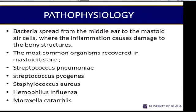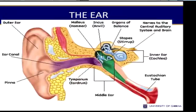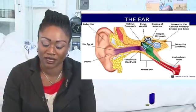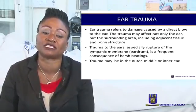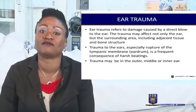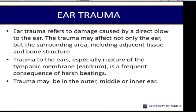Regarding pathophysiology: the bacteria spread from the middle ear to the mastoid air cells, where the inflammation causes damage to the bony structures. The most common organisms recovered are those mentioned earlier. We now come to our second topic, which is trauma to the ear. In the picture we have a diagram of the ear, and once again you are referred to your anatomy and physiology class.